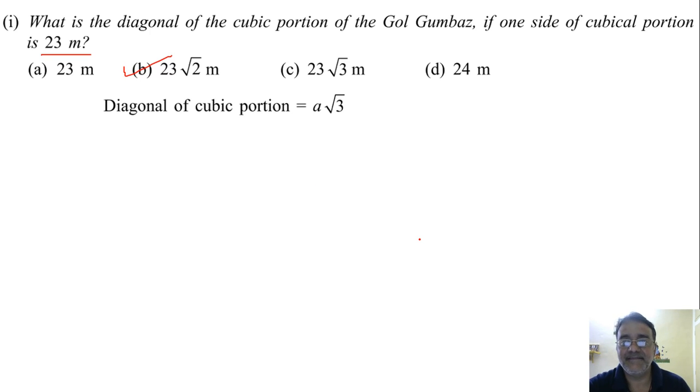Option B nahi hai. a root 2 jo hai wo diagonal of square ka hai. Diagonal of cube jo hai wo a root 3 hota hai. Or diagonal of cuboid kya hota hai root over L square plus b square plus h square. Right. So which option is the correct one? C bit. C bit. Right.